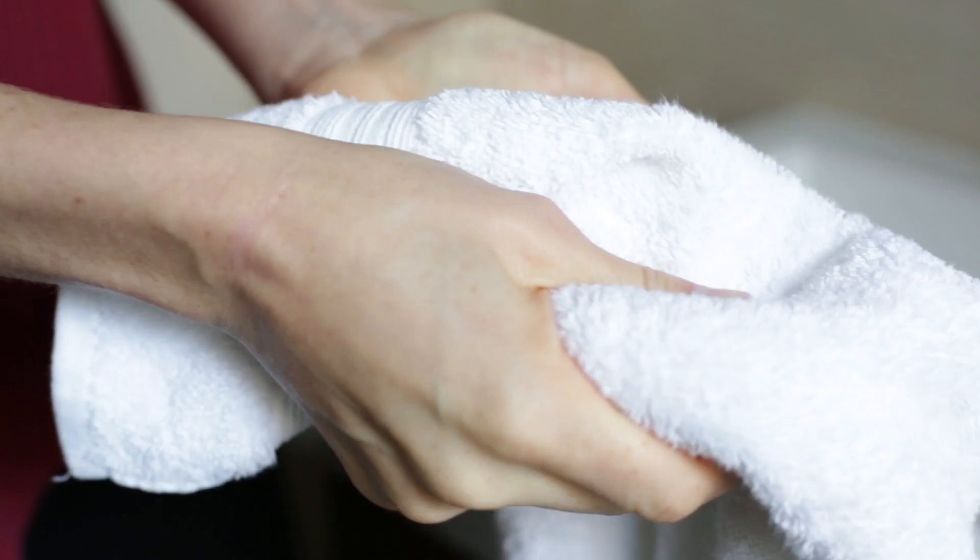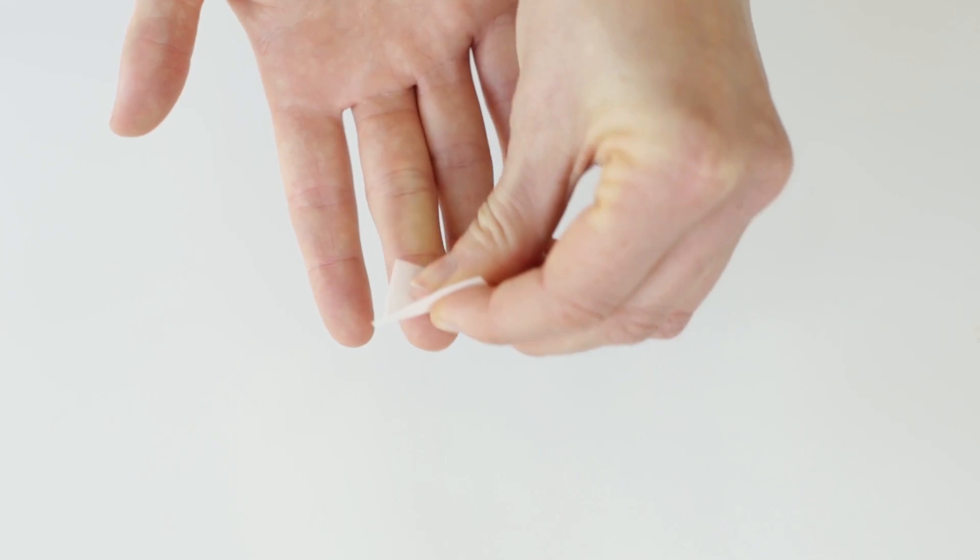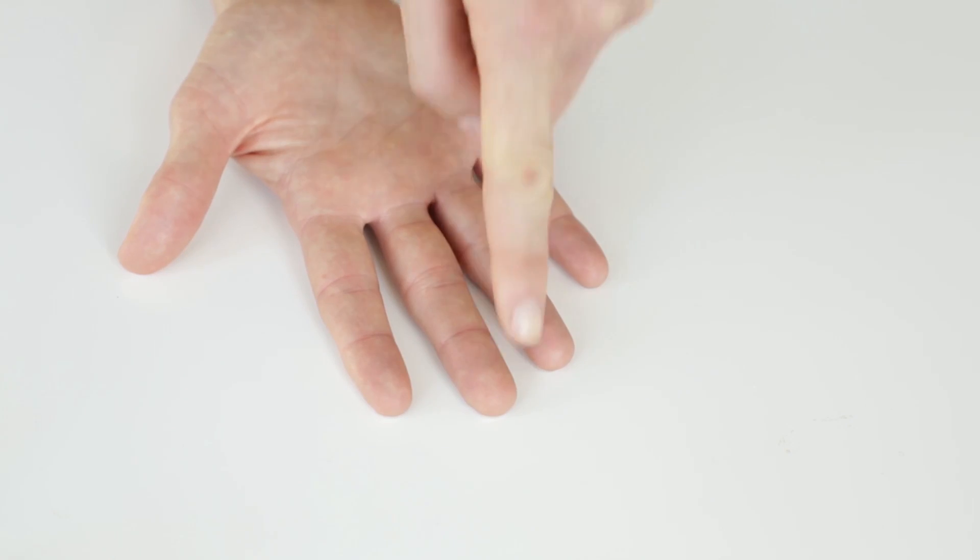Wash and dry your hands and clean your chosen finger with an alcohol wipe. You're going to take blood from one of these two fingers on your least favored hand.